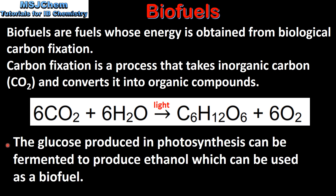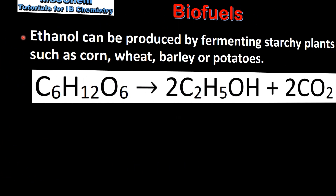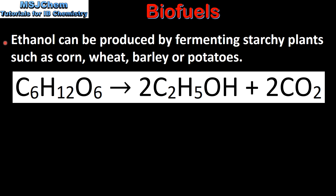The glucose produced in photosynthesis can be fermented to produce ethanol, which can be used as a biofuel. Ethanol can be produced by fermenting starchy plants such as corn, wheat, barley, or potatoes. Here we have the equation for the process in which glucose is fermented to form ethanol and carbon dioxide.